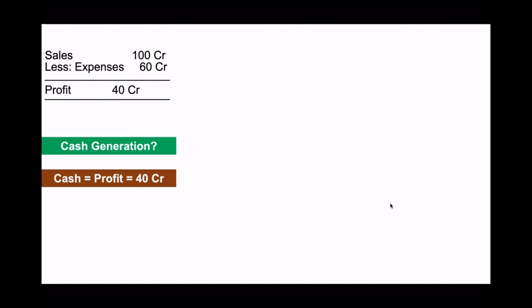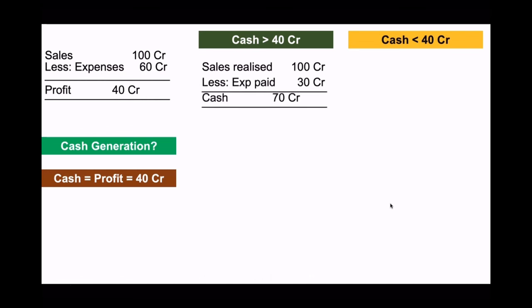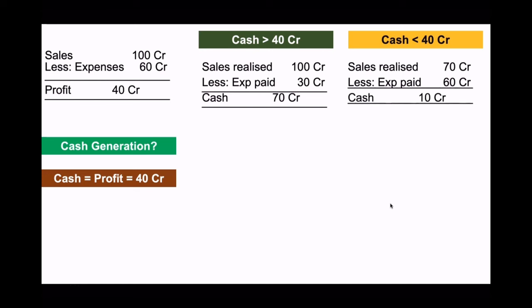It means 100 crore had come in and 60 crore had gone out, so profit will equal cash. But cash can also be greater than 40 crore — for example, when you have realized the entire sales but paid only part of the expenses, so cash is 70 crore. It can also be less than 40 crore when you have realized only part of the sales but paid full expenses — say realized only 70 crore but paid entire 60 crore, so cash is only 10 crore.